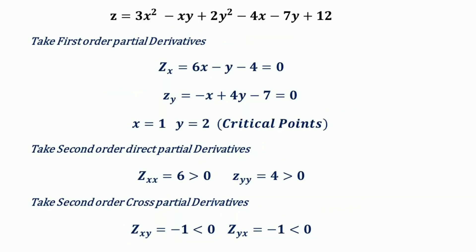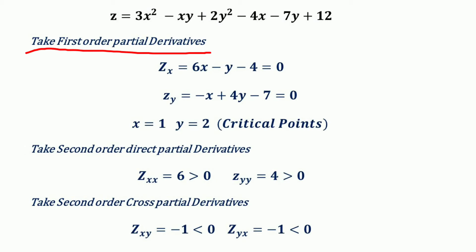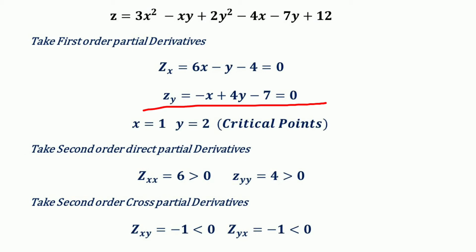Here we have the function z = 3x² − xy + 2y² − 4x − 7y + 12, and we want to optimize this function. For that, we take the first order partial derivatives with respect to x and y. The partial derivative with respect to x gives 6x − y − 4 = 0, and the partial derivative with respect to y gives −x + 4y − 7 = 0.